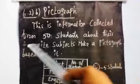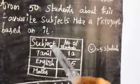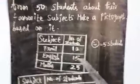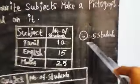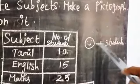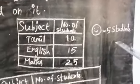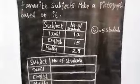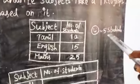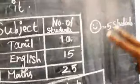Make a pictograph based on it. Write the subject — Tamil, English, Maths — and the number of students: Tamil is 10, English is 15, Maths is 25. We are using a smiley symbol where one smiley is equal to five students. So for Tamil with 10 students, we draw two smileys.